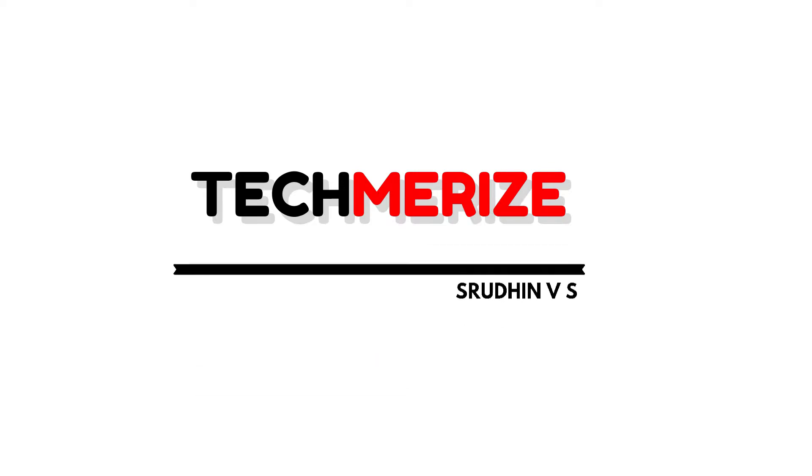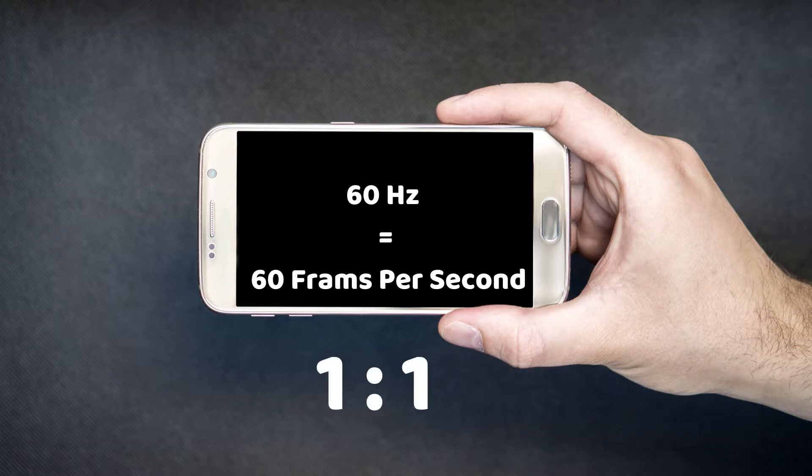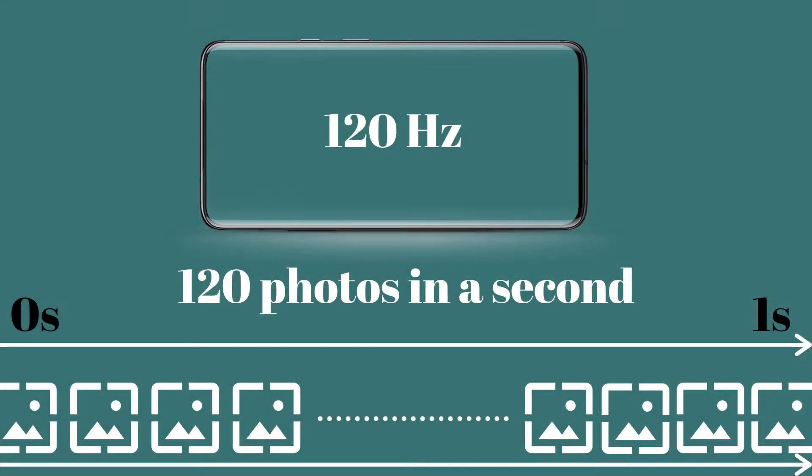Before we start, let's establish some physics lessons for this video — specifically the relationship between screen refresh rate and frames per second. A 60 Hz refresh rate screen can show up to 60 frames per second, which is a one-to-one ratio. Similarly, a 120 Hz display can show up to 120 frames per second, meaning 120 photos are shown in a span of one second. So whenever I mention FPS, you can treat it as Hz too.